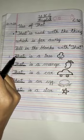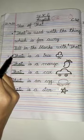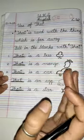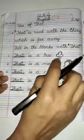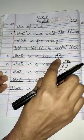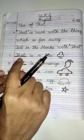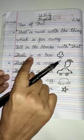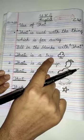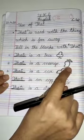The picture which we draw on our right hand side is far away. Our first picture is a tree, so we will write: that is a tree. Our second picture is mango.